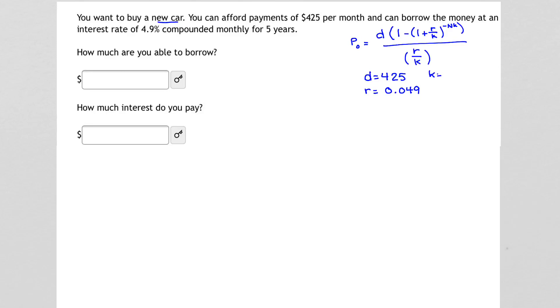K is the number of times we pay per year. Since we're paying monthly, K is 12, 12 months in a year. And N is the number of years for our loan. We're looking at a 5-year loan. One other thing I like to gather is NK, because that's our exponent. N times K is 12 times 5, or 5 times 12, and that's 60.